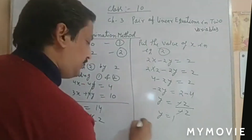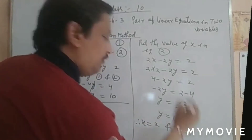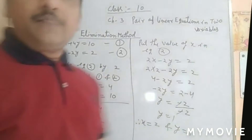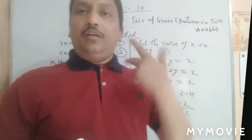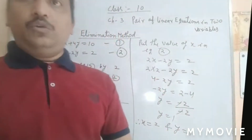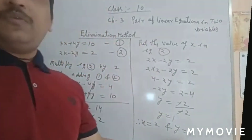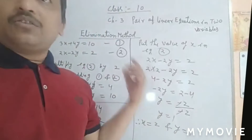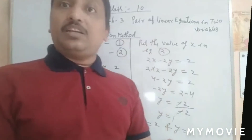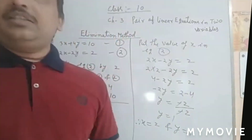Therefore, x = 2 and y = 1 are the solutions of the given equations. If we want to verify the answer — as explained in the substitution method — we put the values of x and y back into the equations. If they satisfy both equations, we can be sure the answer is correct.